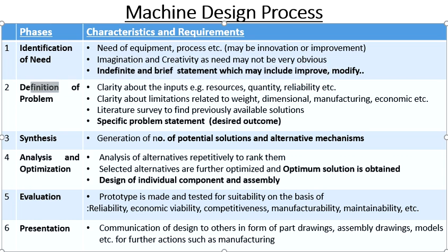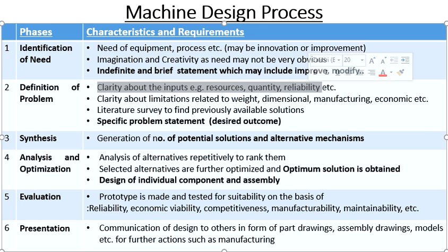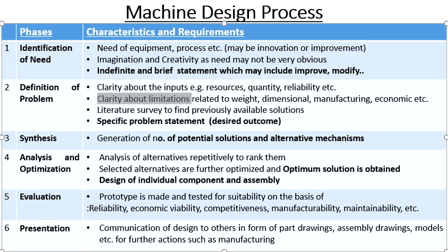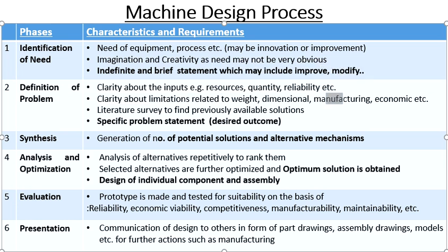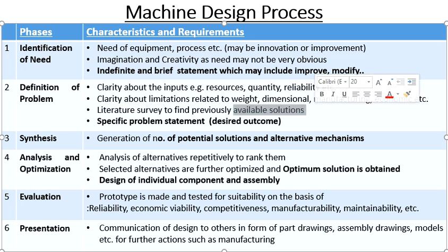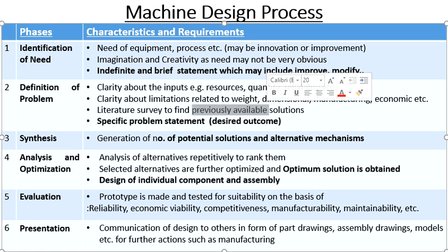The second stage is definition of problem. We have to convert the indefinite statement from the previous stage into a definite, specific problem statement. For this purpose we need clarity about inputs like resources, quantity, and reliability, as well as limitations and constraints related to weight, dimensions, manufacturing considerations, and economic considerations. Literature survey is a very important aspect here, as it might provide solutions related to problems that can help solve the existing problem.